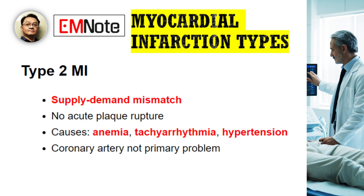Next is type 2 MI. This type is about a supply and demand imbalance. Here, there's no acute plaque rupture. The ischemia is secondary to a condition that either increases the heart's oxygen demand or reduces the oxygen supply. We see this in patients with severe anemia, tachyarrhythmias, or uncontrolled hypertension, where the heart is working so hard it outstrips its available oxygen, even with a patent coronary artery. It's a key distinction — the coronary artery itself isn't the primary problem.